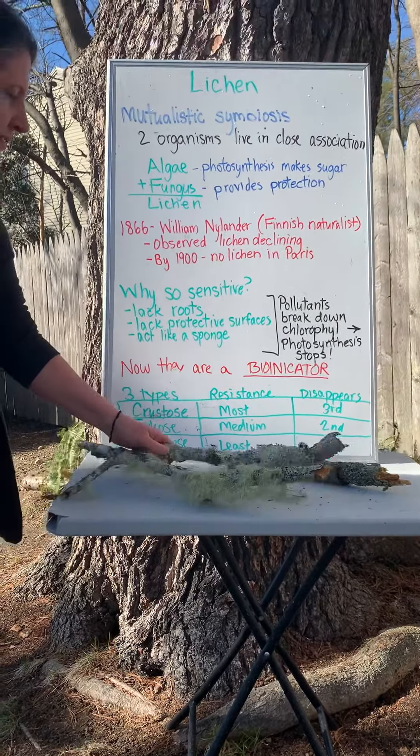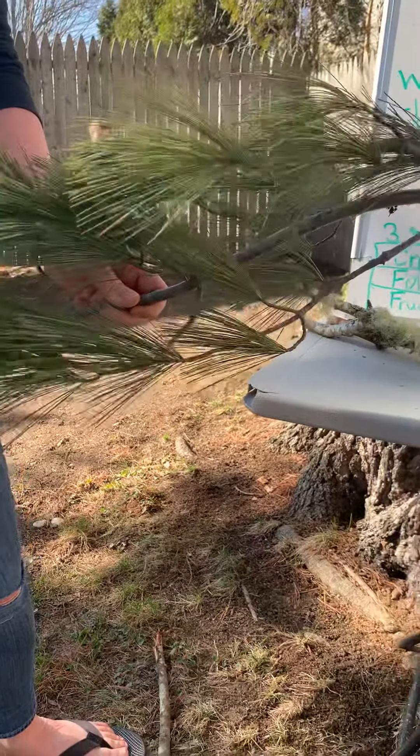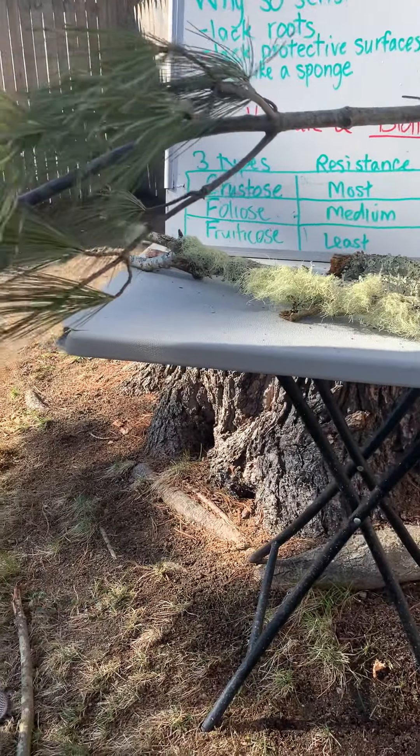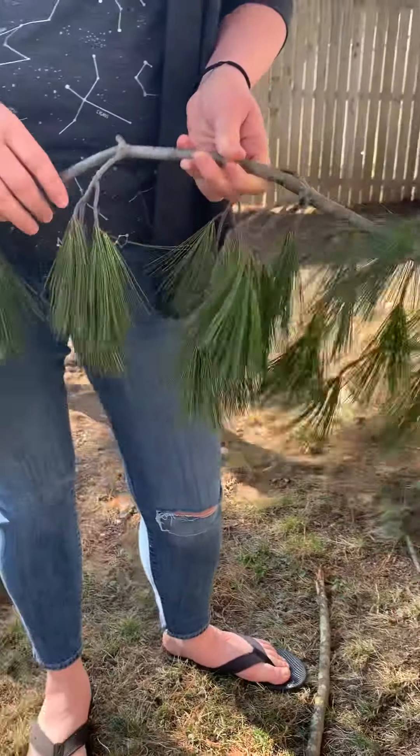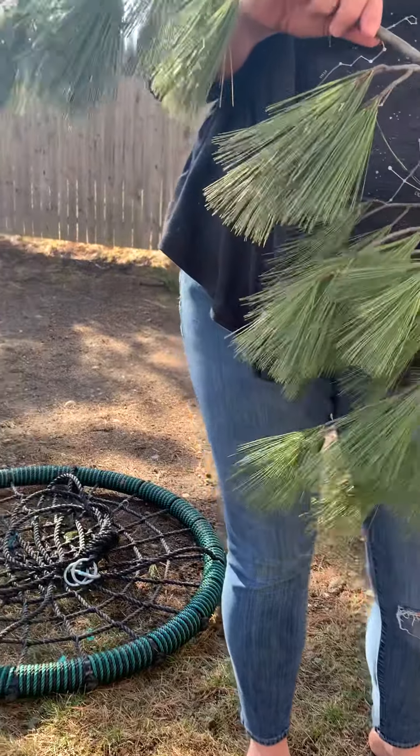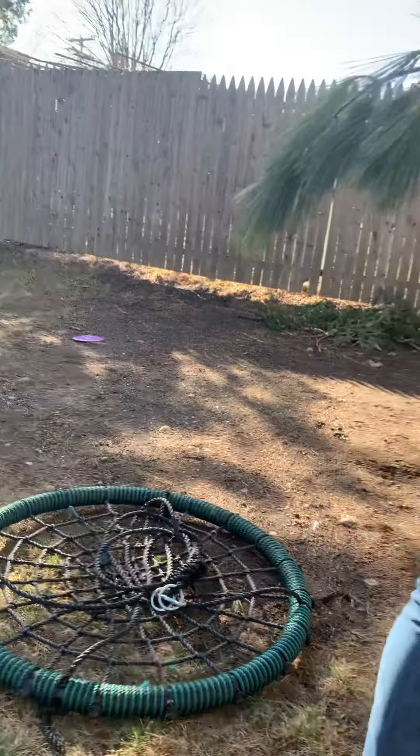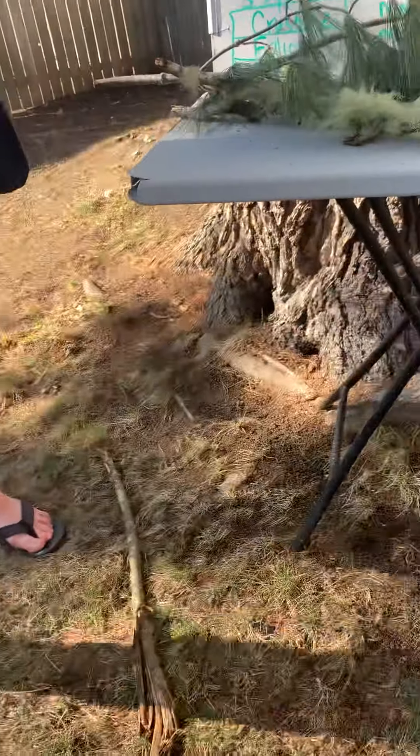If you look at this table right here — let's back it out so we can see the whole table — so if the air quality is getting bad, the fruticose will go away first; it's the least resistant. Foliose will be the second one to disappear, and crustose is the last.